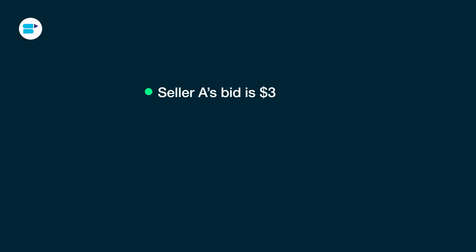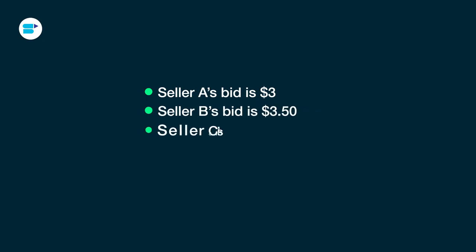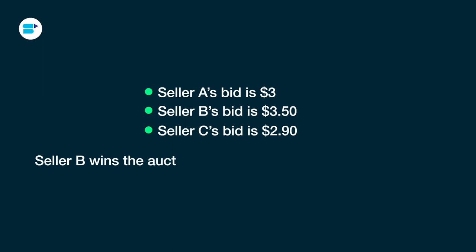What determines the click price? Essentially your competitors do. Amazon's auctions usually follow the second price auction rule — the highest bidder only pays $0.01 more than the second highest bidder. For example, if Seller A bids $3.00, Seller B bids $3.50, and Seller C bids $2.90, Seller B wins the auction but only pays $3.01 for each click.